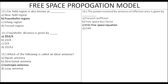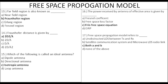The power received by an antenna of effective aperture is given by the Friis free space equation. For the free space propagation model, applicable environments include unobstructed satellite, microwave, and wireless links — so both A and B are the answer.